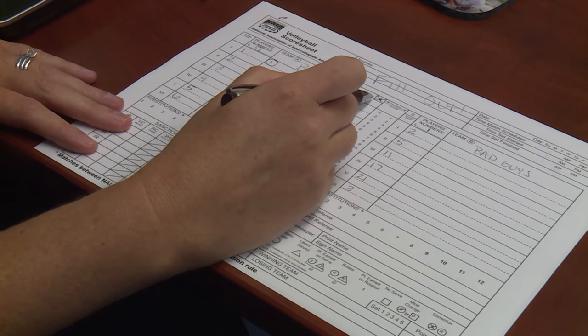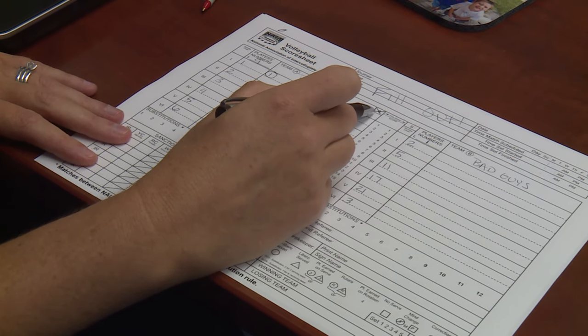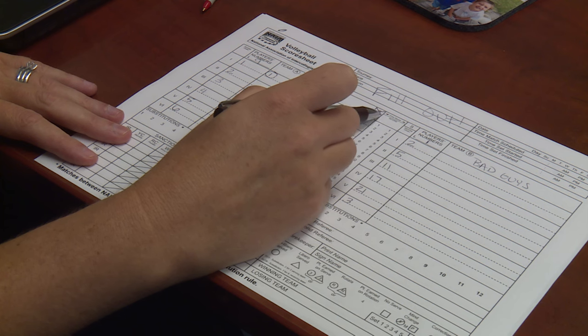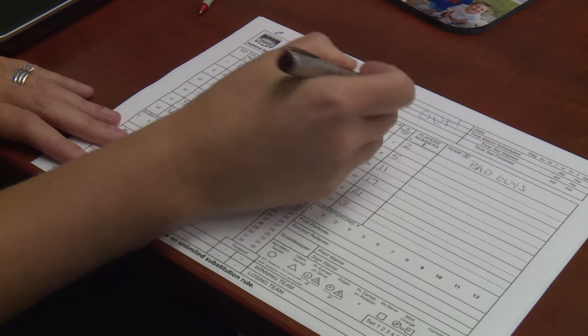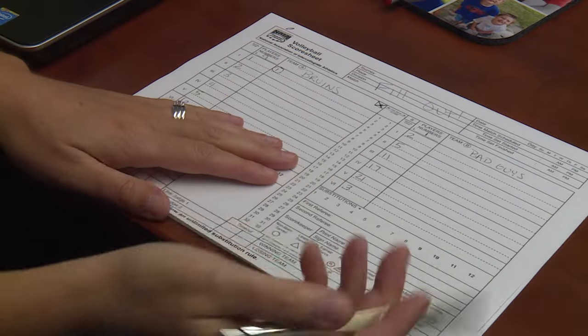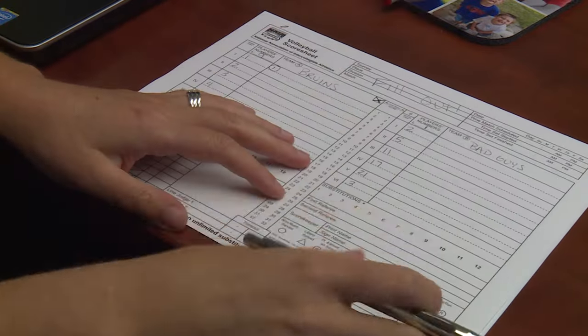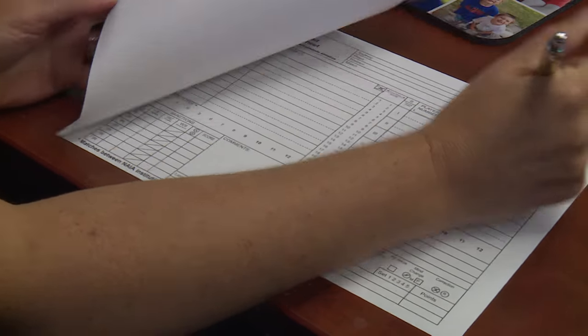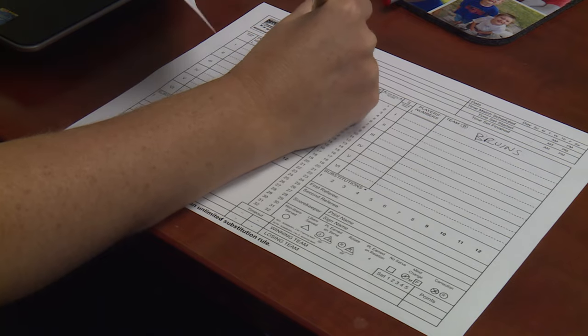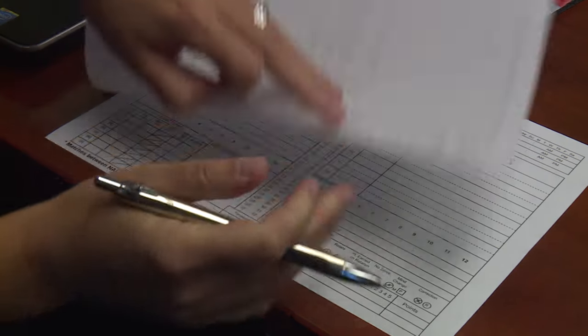Right here is the most important thing. As soon as captains are called and they do the coin toss, you need to mark down or at least ask the referee who has the first serve. And it says in teeny tiny print right here, first serve, and then you just mark an X in it. So then when the next set happens and they change sides, so Bruins on this side, you would write Bruins on this side. And then the other team would be the first serve on that one.